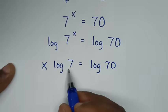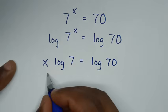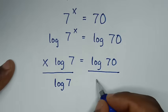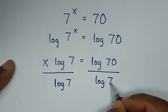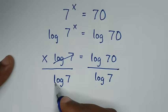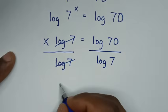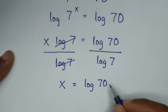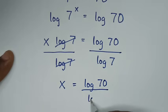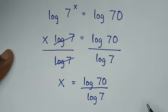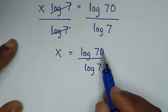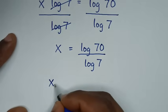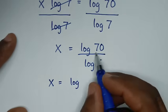Then we'll divide by log of 7 on both sides, so here it will be over log of 7 and on this side over log of 7. This and this will cancel, then it will be x is equal to log of 70 over log of 7.